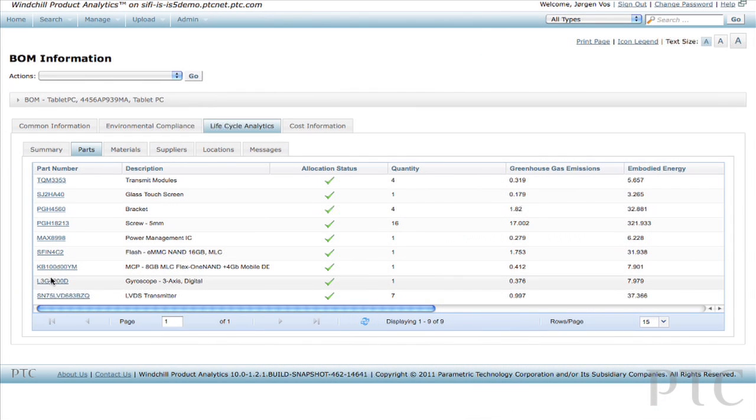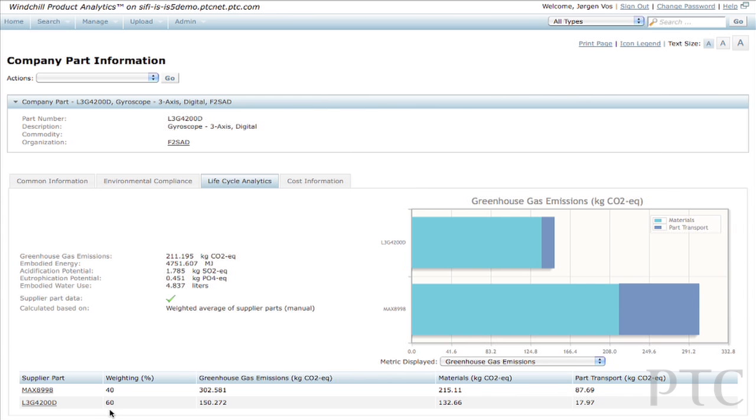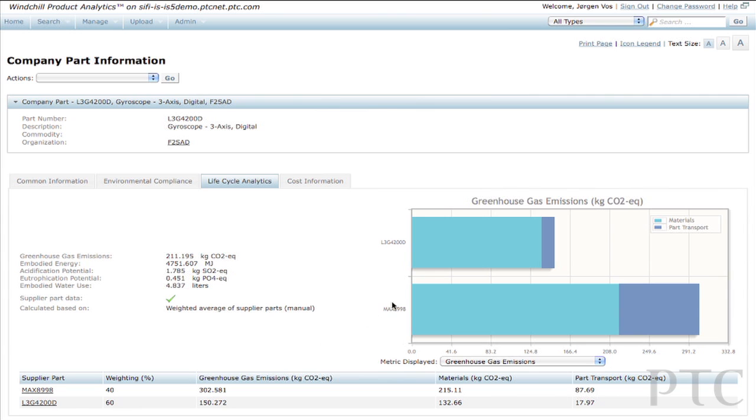Businesses around the world use lifecycle assessment, or LCA data, to assess the environmental impact of their products and services. They use the results of these studies to develop greener and more competitive products.